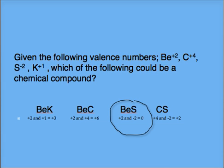Beryllium, with a charge of positive two, and carbon, with a charge of positive four, yields a total of positive six. This will not proceed.